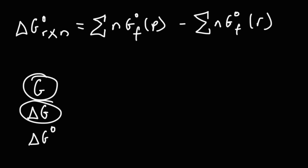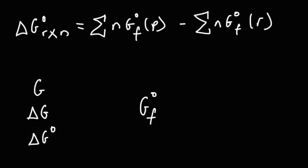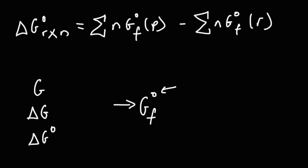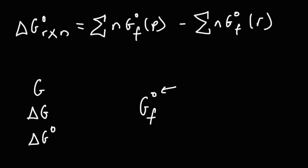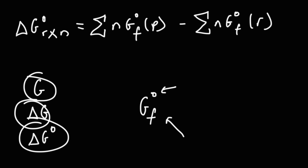There are a lot of different delta G symbols, so just to review: G is Gibbs free energy; delta G is the change in Gibbs free energy; delta G naught is the standard free energy change. Delta G-naught-f, with an F subscript for formation, is the standard free energy of formation — that is, the free energy for forming a substance from its constituent elements in their natural standard states. You can look up these values in a table. The F just stands for formation.